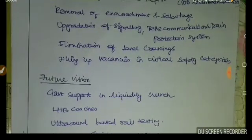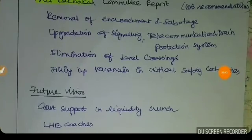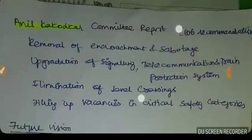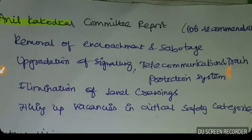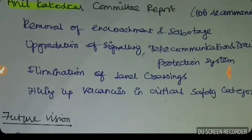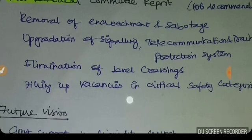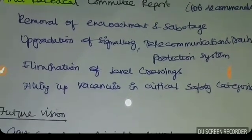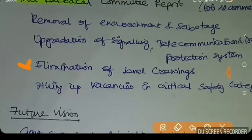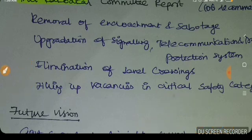The Anil Kakodkar Committee is the first major safety committee for railways. Its recommendations include: removal of encroachment and sabotage on railway tracks, improvements in signaling and telecommunication, elimination of level crossings, and filling vacancies in critical safety areas.